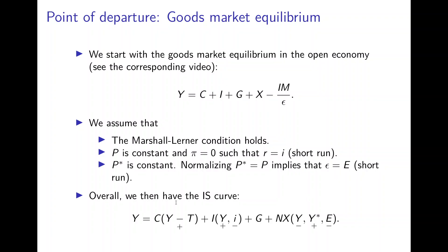Then we have the overall IS curve, where we plug in the functional forms. Consumption depends positively on disposable income. Investment depends positively on income and negatively on the interest rate. Net exports depend negatively on home income, because that raises imports, positively on foreign income because that raises exports, and negatively on the exchange rate because the Marshall-Lerner condition holds.